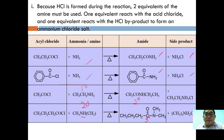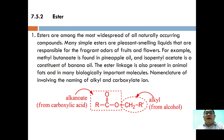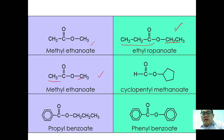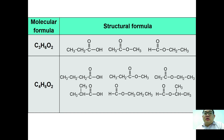Next we look at esters. Esters are among the most widespread of all naturally occurring compounds. Many simple esters are pleasant-smelling liquids responsible for the fragrant odor of fruits and flowers — for example, methyl butanoate is found in pineapple oil, and isopentyl acetate is banana oil. The ester linkage is also present in animal fats and many biologically important molecules. Naming convention: use the alkyl group from the alcohol and the carboxylate ion from the carboxylic acid — e.g., methyl methanoate, methyl ethanoate, ethyl propanoate, cyclohexyl methanoate, propyl benzoate, and phenyl benzoate.